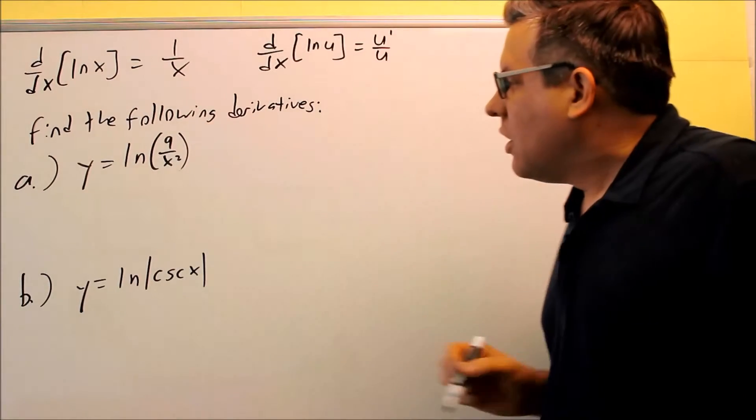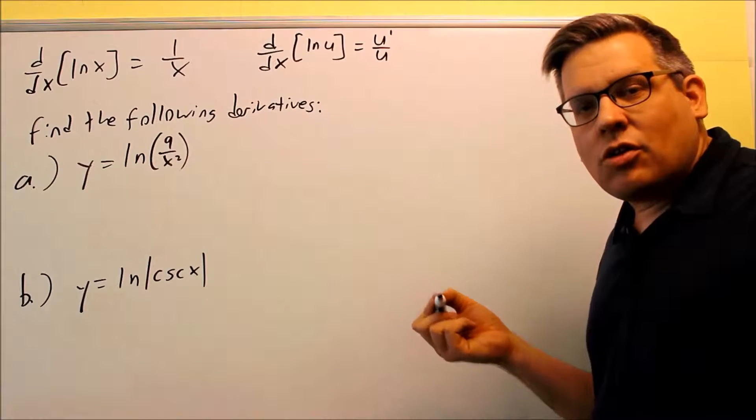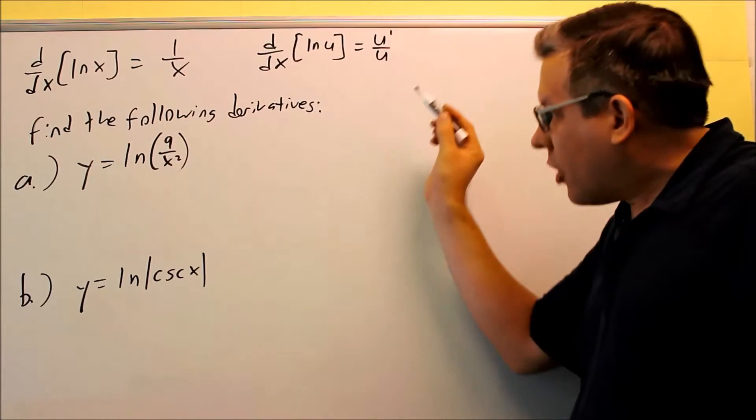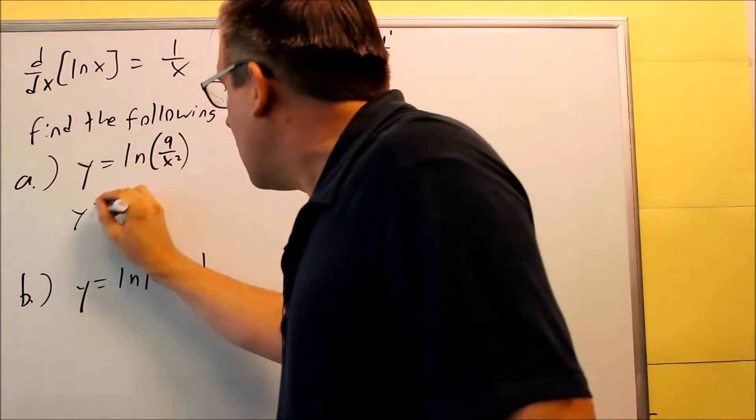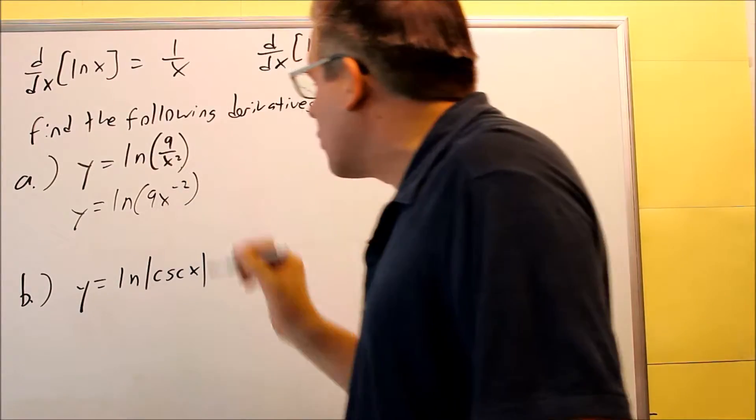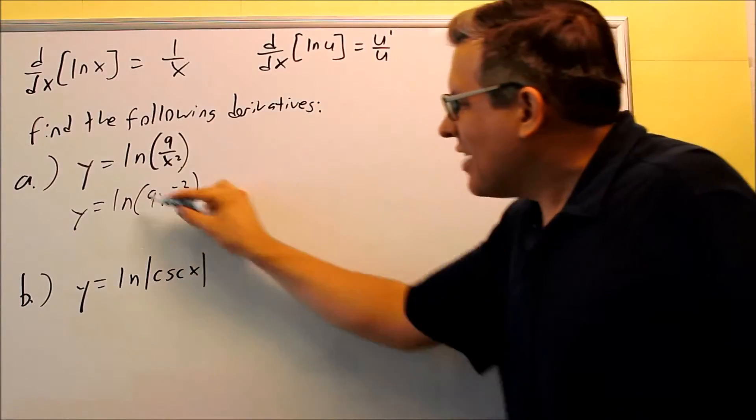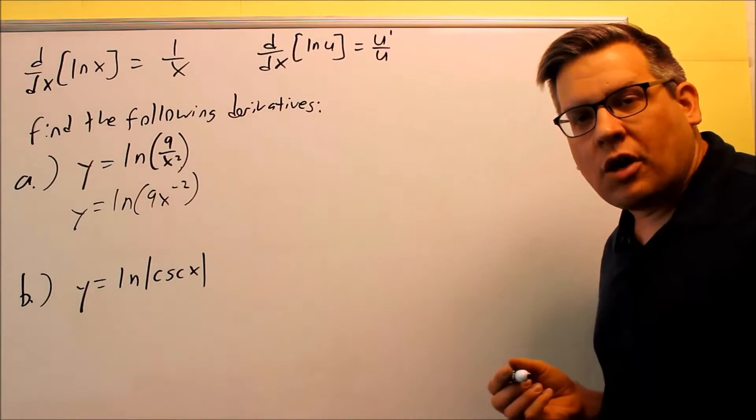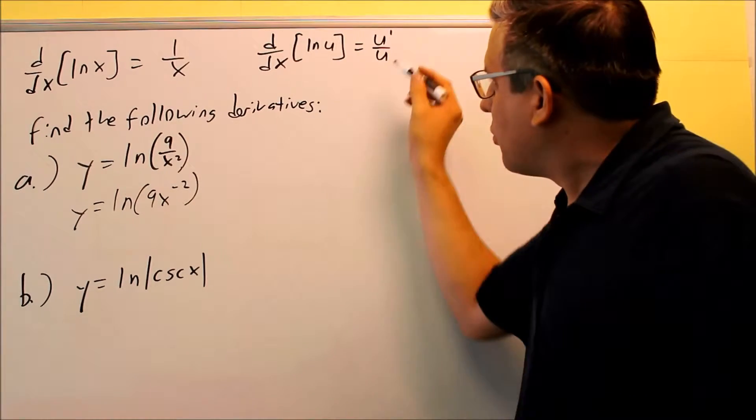Now for this one, that could be something that you could use a quotient rule for when we get to the u prime part, but instead, I'm going to actually rewrite this as 9x to negative 2. I'm going to do that part first, and the reason why is because it's going to be easier to take a derivative of that if it's in this form, that way we don't need to worry about using quotient rule. So let's apply this formula.